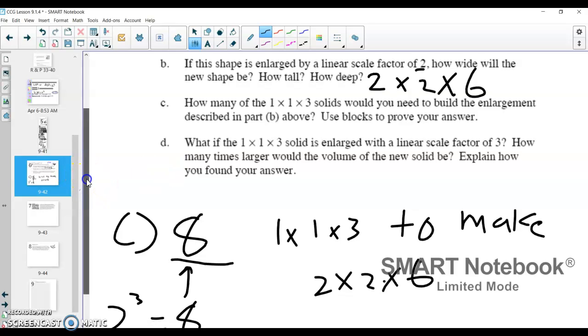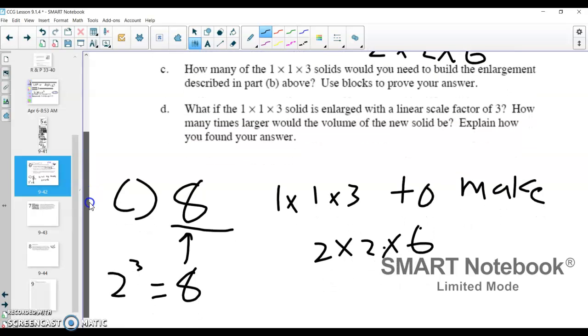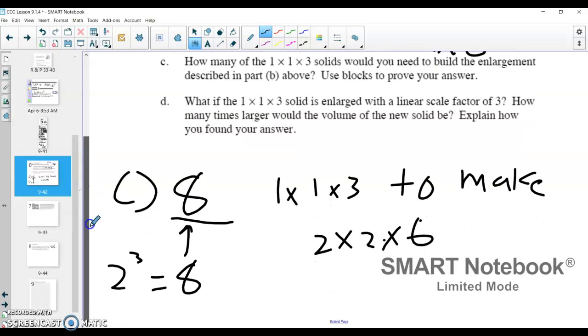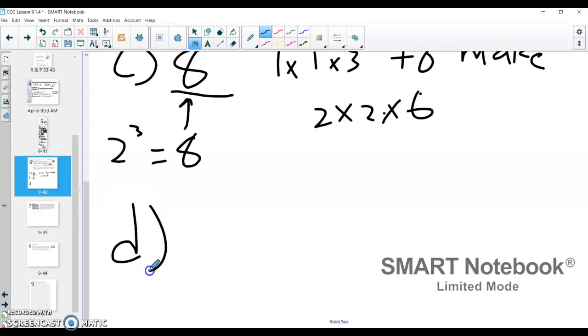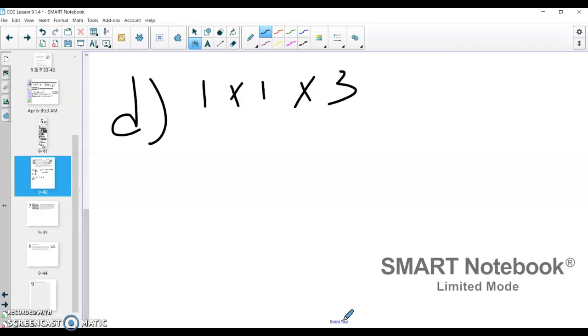All right, and then we'll end, well, we'll do part D here. It's saying what if the one by one by three, we had a scale factor, a linear scale factor of three. Well, if we had a one, there's a couple ways we can do this. If we have a one by one by three shape, and we enlarge everything by a linear scale factor of three, that means this got three times bigger, this gets three times bigger, and this gets three times bigger. Our length, our width, and our height get three times bigger. So now we have three times three times nine.